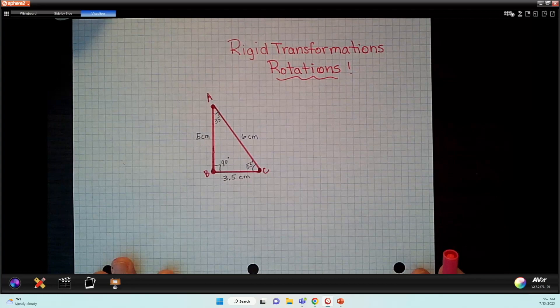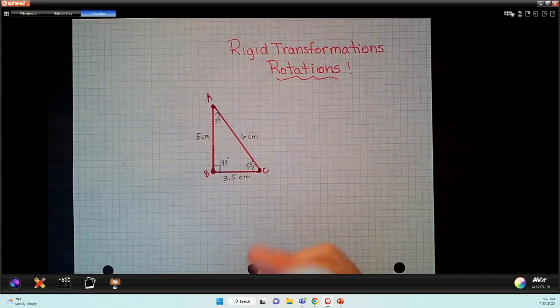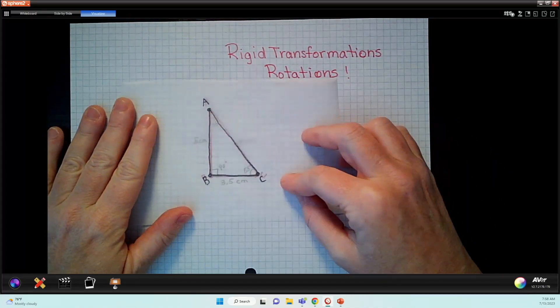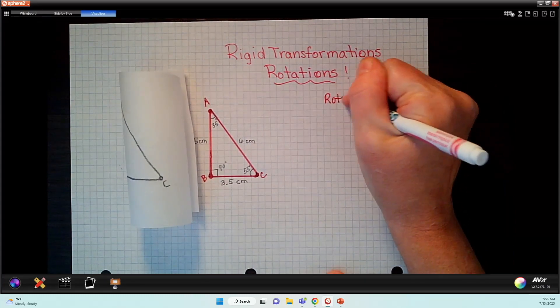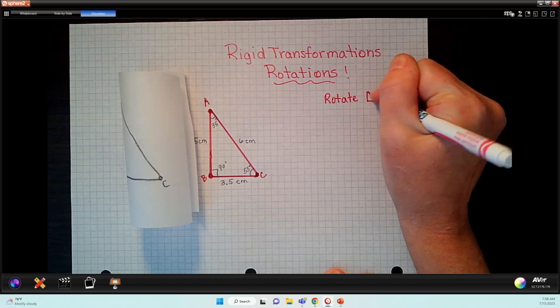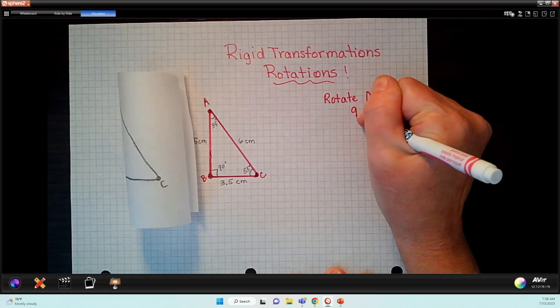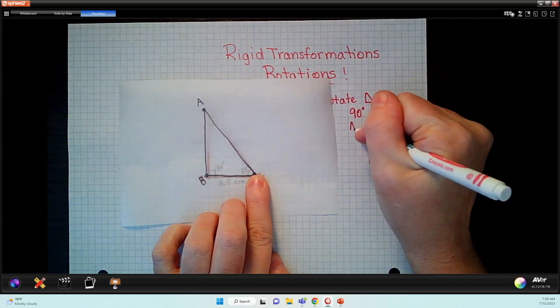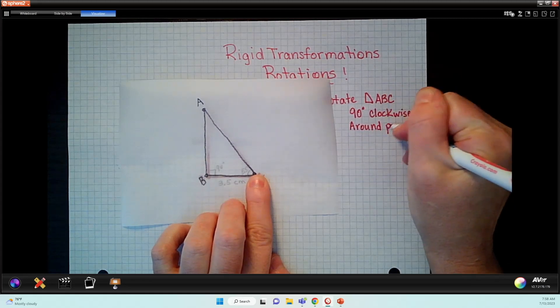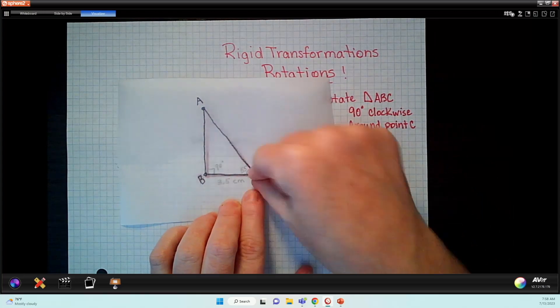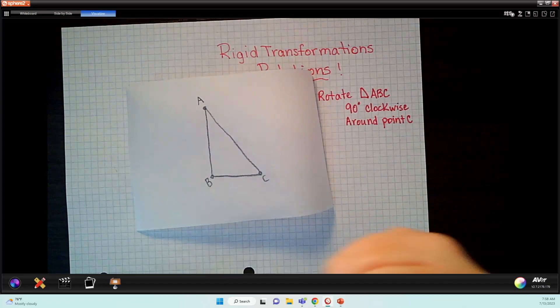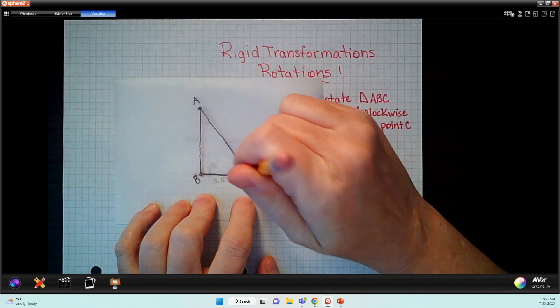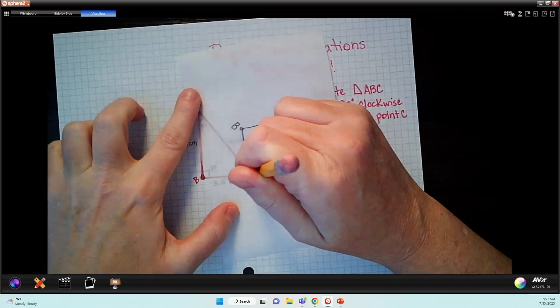So I find the tracing paper exceptionally useful for rotations. Students can sometimes struggle with seeing a rotation. So if I want to rotate my triangle ABC, so the directions may say rotate 90 degrees triangle ABC 90 degrees. And I'm going to stick with clockwise for this example. There's always a center of rotation. So we're going to say we're going to rotate 90 degrees around point C. Think of it as like the anchor. Or if you have like a wheel, a tire, this is the center. And I'm going to rotate this around.